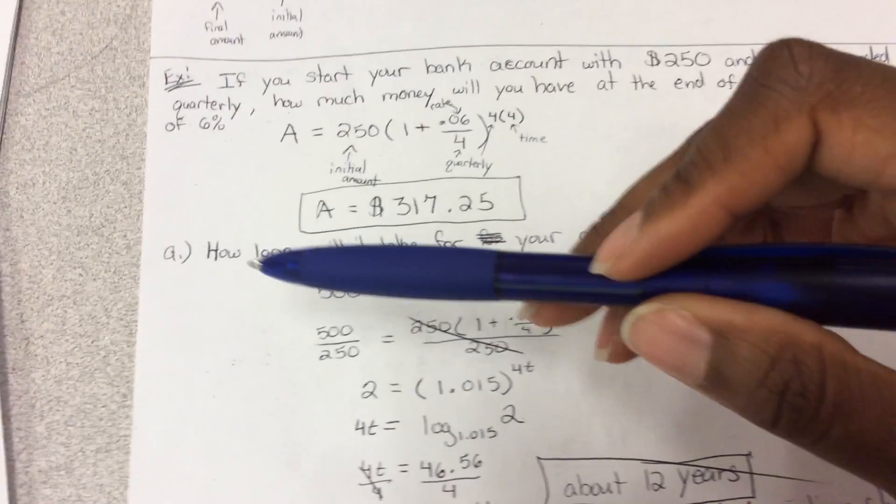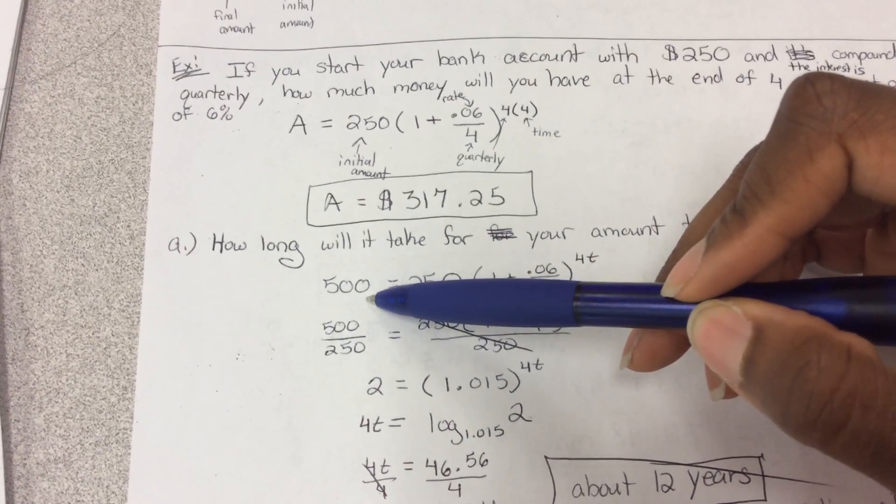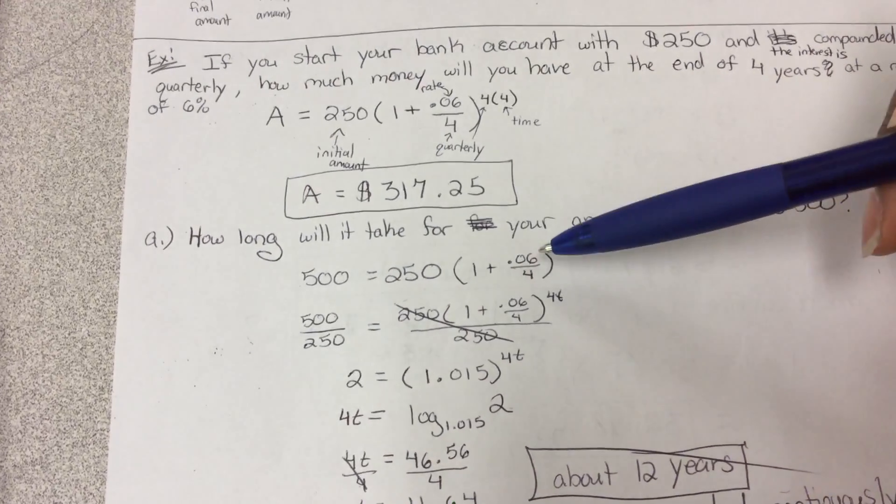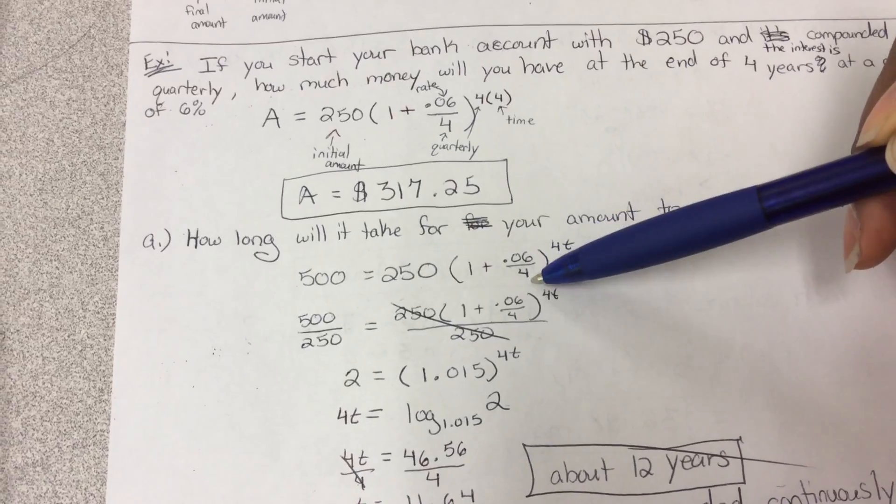So that's what we're going to plug in for A, because we're given the final amount. We keep the same information. Our initial amount that we started off with is $250. Our rate is still 6%, it's still quarterly.